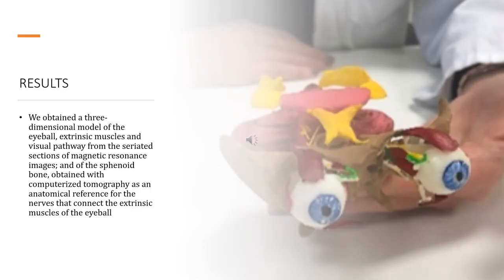Finally, we obtain a 3D model of the eyeball, extrinsic muscles, and visual pathway from seriated sections of magnetic resonance images, and of the sphenoid bone using computerized tomography images, along with an anatomical reference for the nerves that connect the extrinsic muscles of the eyeball.